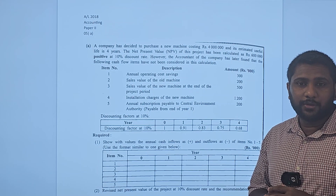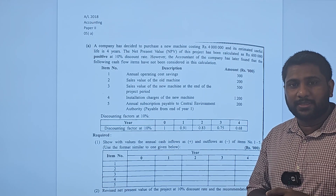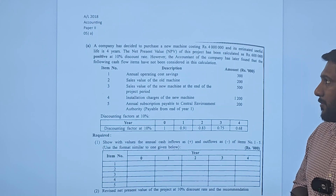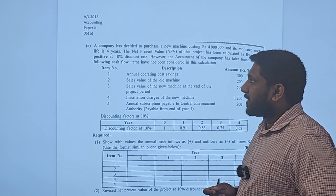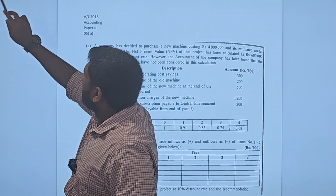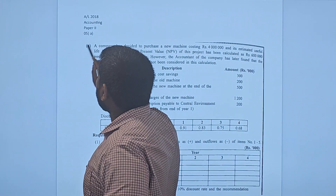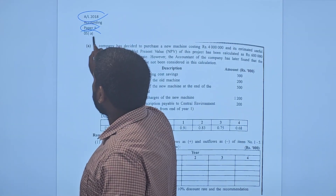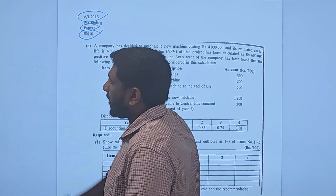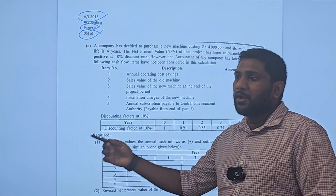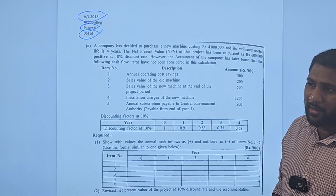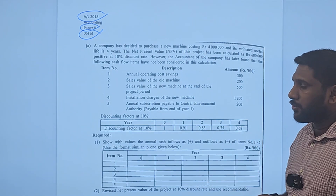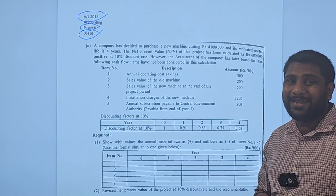Hi everyone. Today we are going to discuss a past paper question from the area NPV. The question we are going to discuss is 2018 Paper 2, Question 5, Part A. If you are calculating your entire paper from 400 marks, this particular question will count for 10 marks.